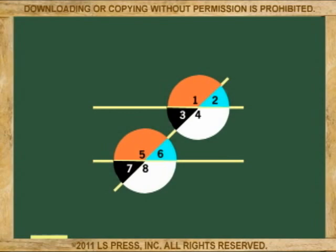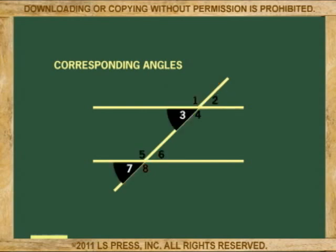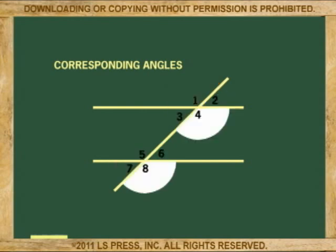And the following four pairs of angles, because they face in the same direction, are called corresponding angles: one and five, two and six, three and seven, four and eight.